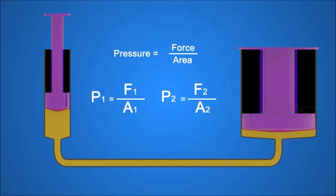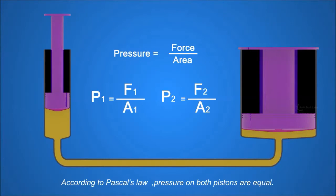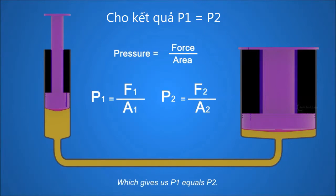So P1 equals F1 divided by A1, and P2 equals F2 divided by A2. According to Pascal's law, pressure on both pistons are equal, which gives us P1 equals P2.